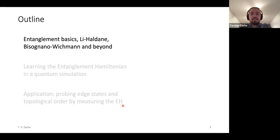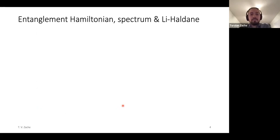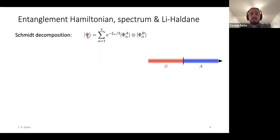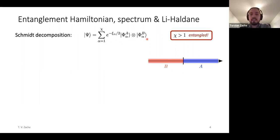Let me start with the basics and settle some notation. Consider a pure quantum state psi that lives on some Hilbert space with an associated spatial structure, separable into spatial regions A and B. We can write a Schmidt decomposition, rewriting the state as a superposition of tensor product states. This serves as the very definition of entanglement: if there's only one term in the sum, the state is just a simple product state; if this number chi is larger than one, then we call the state entangled.